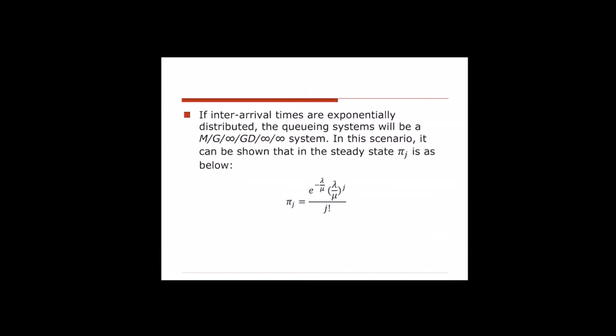We can also show that if inter-arrival times have exponential distribution and service time can have any general distribution, we write this system as M/G/∞. In this case, we can use the Poisson formula π_j = e^(−λ/μ) · (λ/μ)^j / j! to calculate the steady-state probability π_j — the probability of having j customers in the system. This formula holds if and only if the inter-arrival time is exponential, service time is general, and there are infinite servers.